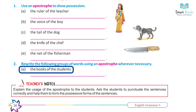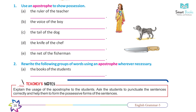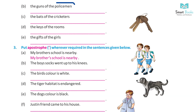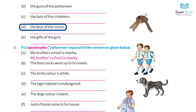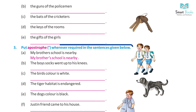Exercise 2 — rewrite the following using an apostrophe wherever necessary: a) the books of the students → the students' books. Teacher's note: explain the usage of the apostrophe to the student and ask them to punctuate sentences correctly. b) the guns of the policeman → the policeman's guns; c) the bats of the cricketers → the cricketers' bats; d) the keys of the room → the keys of the room; e) the gifts of the girl → the girl's gifts.